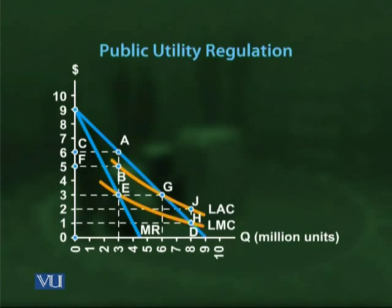Now regulated, the firm produces 6 million units at a price of $3 per unit, down from $6. However, from the socially ideal position — where the long-run marginal cost curve intersects the demand curve at point H — output would be 8 million units at a price of $1 per unit. But at that point the long-run average cost is $2 per unit, so the firm incurs a loss of $1 per unit and will only continue providing the service if given a $1 subsidy per unit.